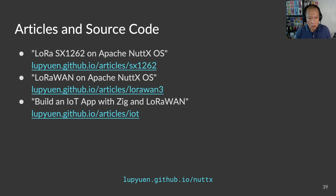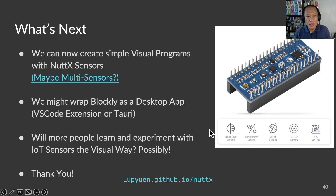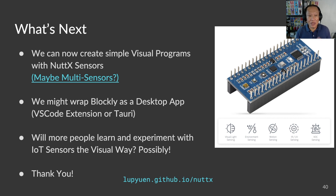But wait, there's more. LoRaWAN is super complicated, so we need a few articles to cover the LoRa transceiver library, the LoRaWAN library, and how we build a LoRaWAN app with Zig. Now we have a fun visual way to program NuttX sensors and send the sensor data to the cloud. We shall experiment with more NuttX sensors like this interesting all-in-one I2C multi-sensor — there are sensors for light, motion, infrared, ultraviolet, and VOC (volatile organic compounds). Blockly isn't well integrated with the NuttX build process — we might wrap Blockly into a desktop app so that visual programs generated by Blockly will go directly into the NuttX build. We still have plenty to do, but hopefully someday our IoT students will experiment with IoT sensors the visual NuttX way.